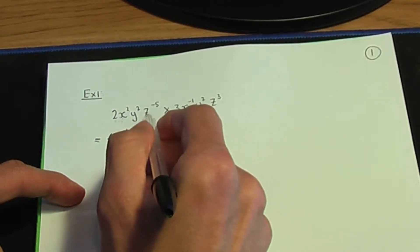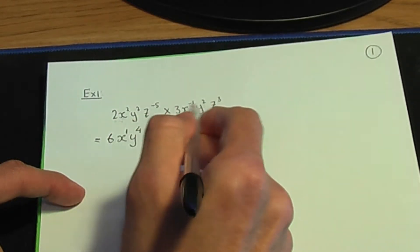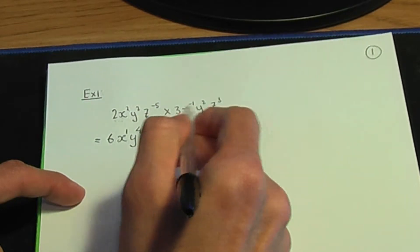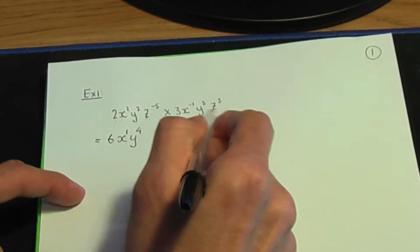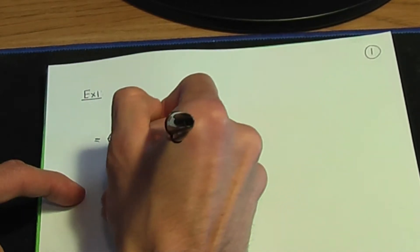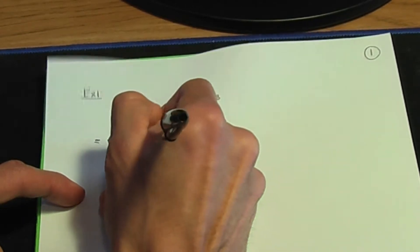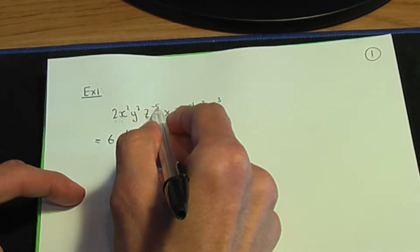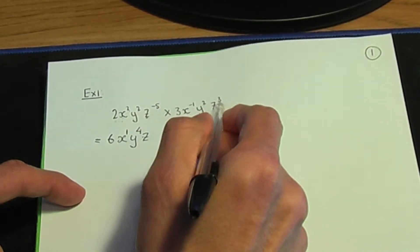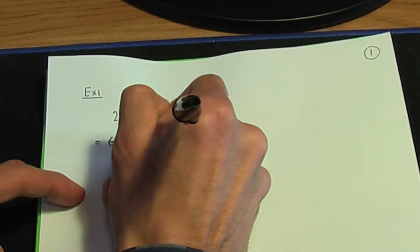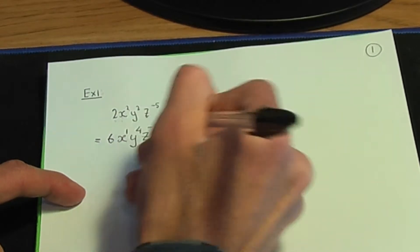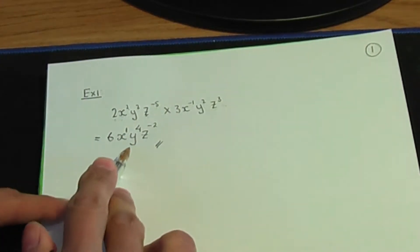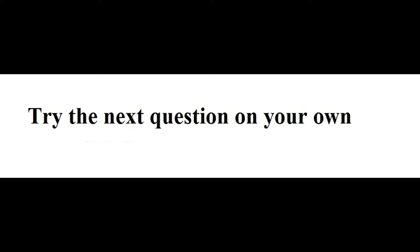Let's multiply the y terms together. I have two terms with the same base and the base is y. When I multiply, y to the power 2 times y to the power 2 is y to the power 2 plus 2, which is y to the power 4. And finally, the z terms — these z terms have the same base. When I multiply, I'll get z to the power minus 5 plus 3, which is minus 2. So that should be the solution to example 1.